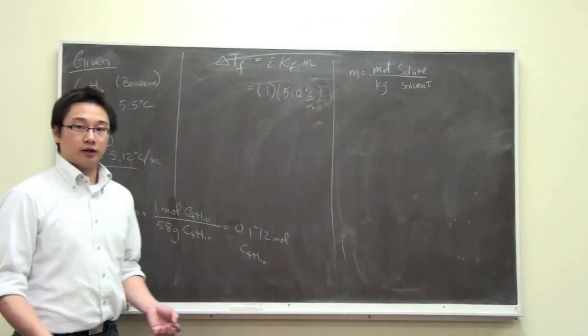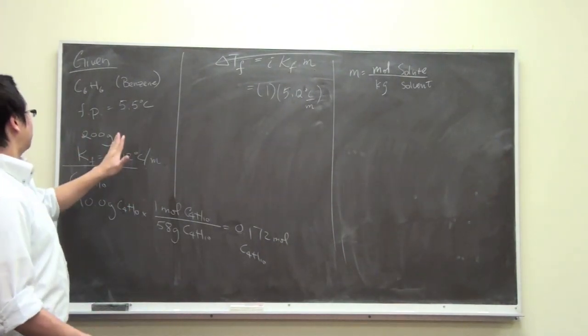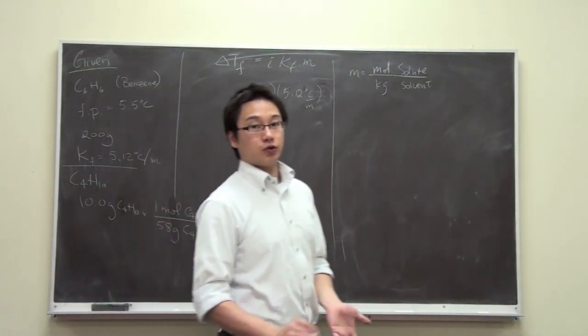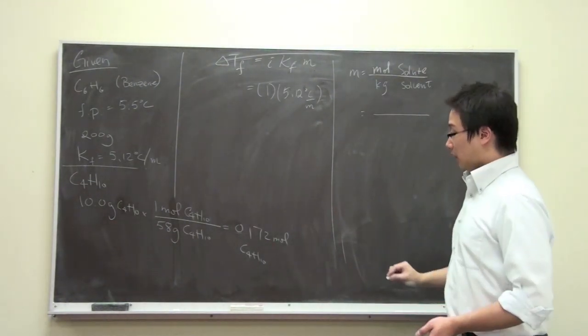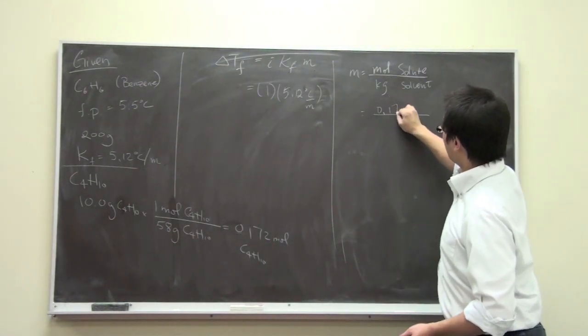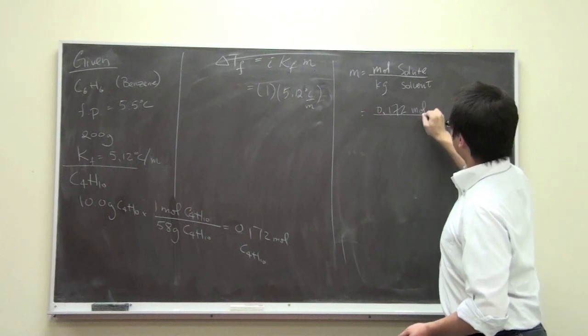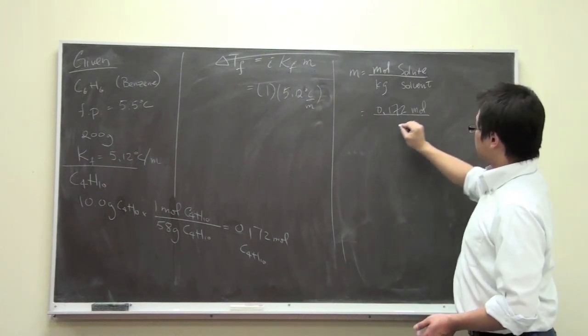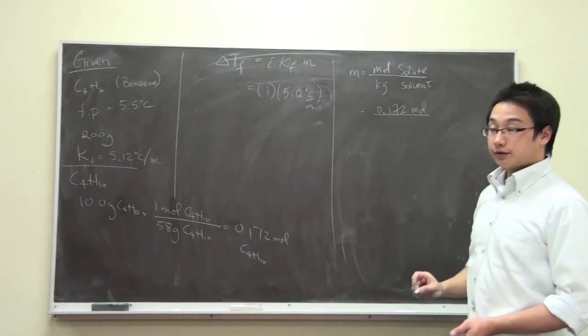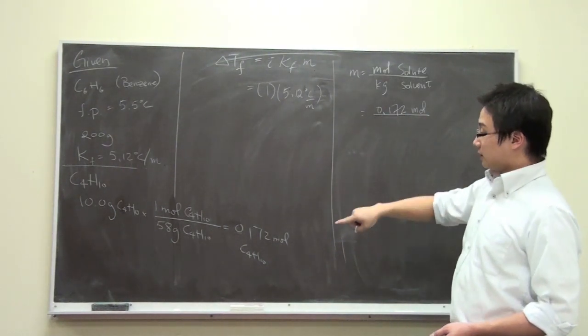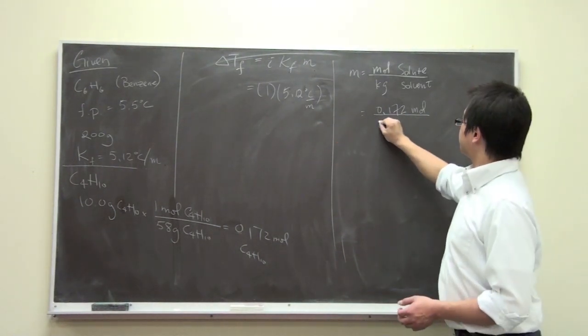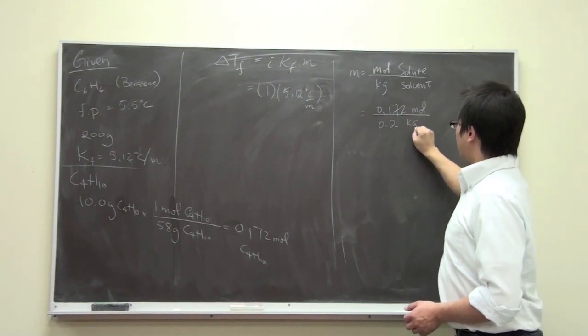Do we have the kilograms of solvent? We have the grams, so we can simply change it to kilograms very easily. Let us put the numbers right here. 0.172 is the mole of solute, and the kilograms of solvent is going to be 0.2 kilograms.